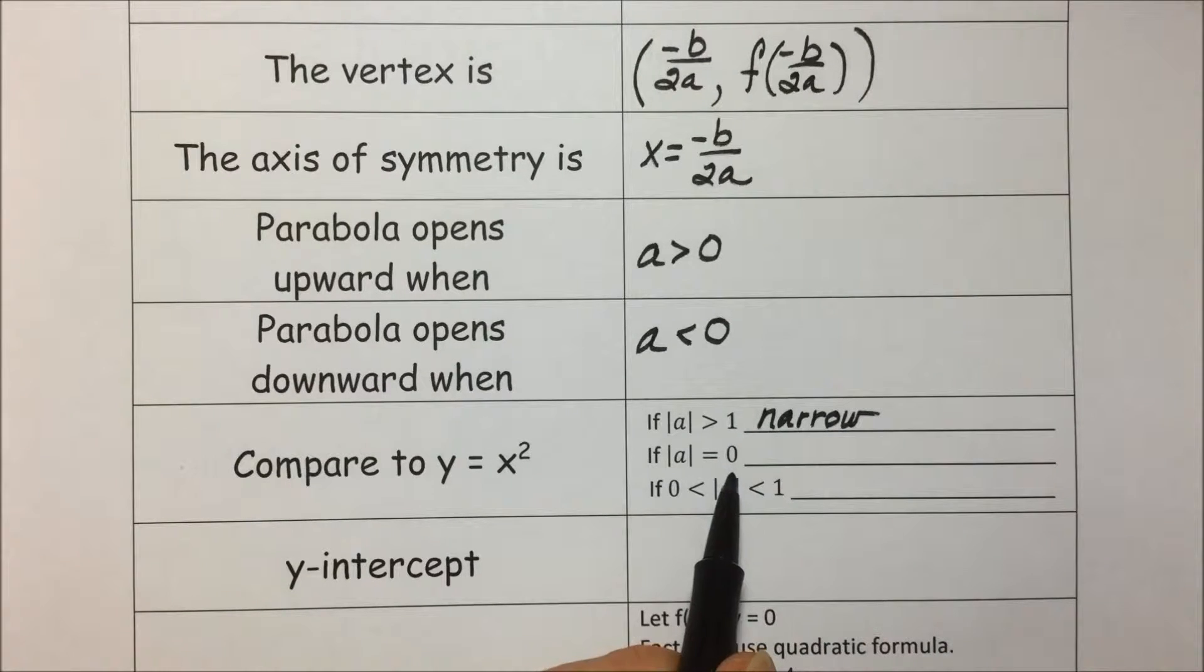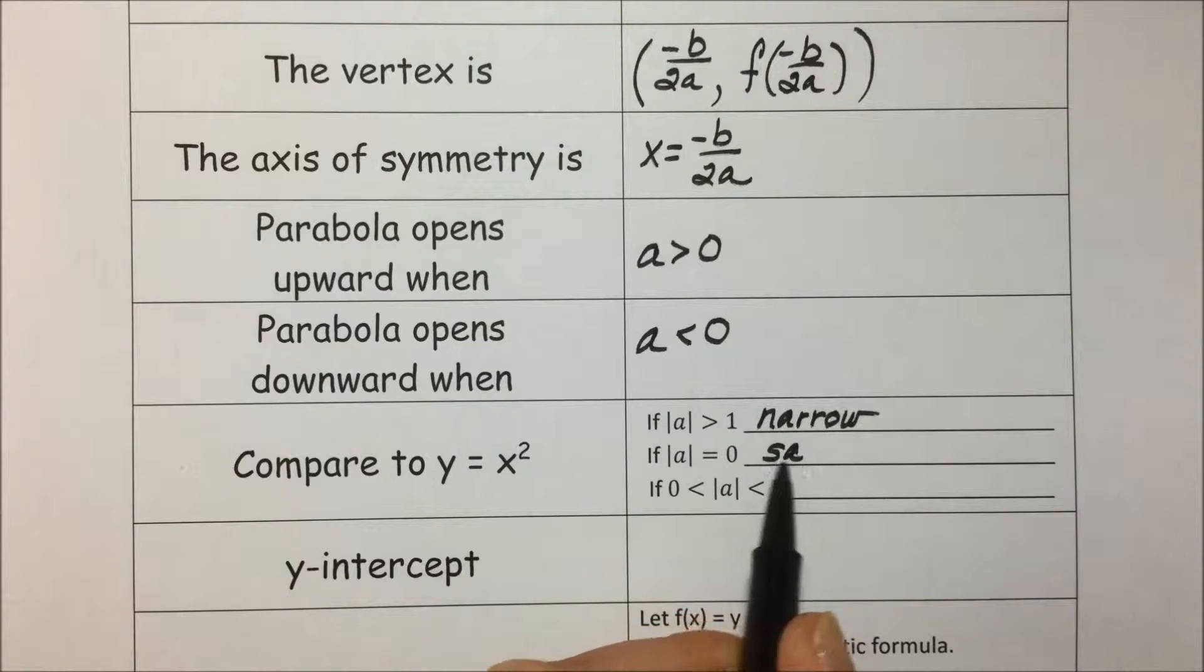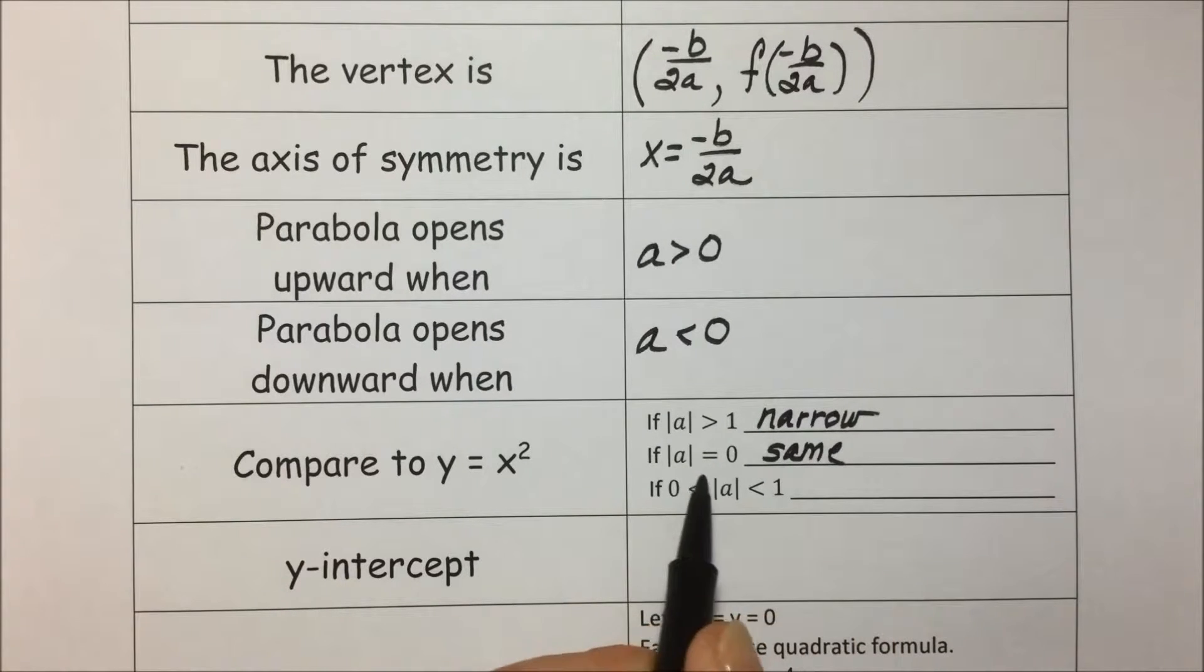If a is equal to... actually, this should be equal to 1. And if our a, the absolute value of it,